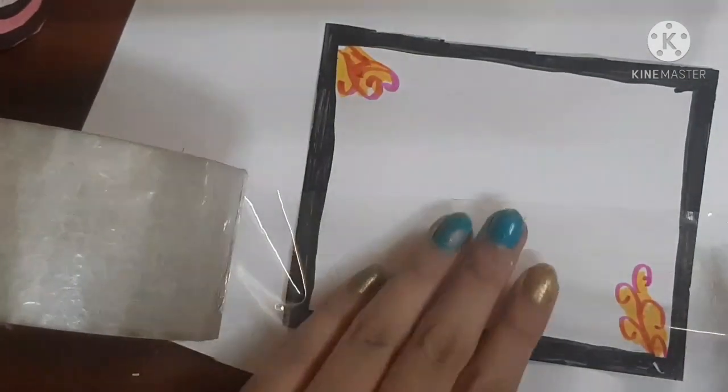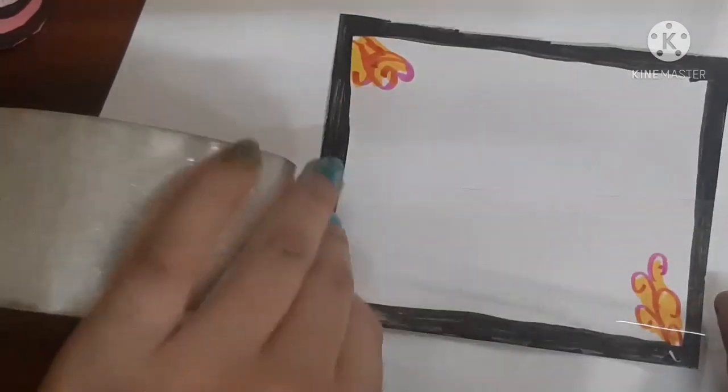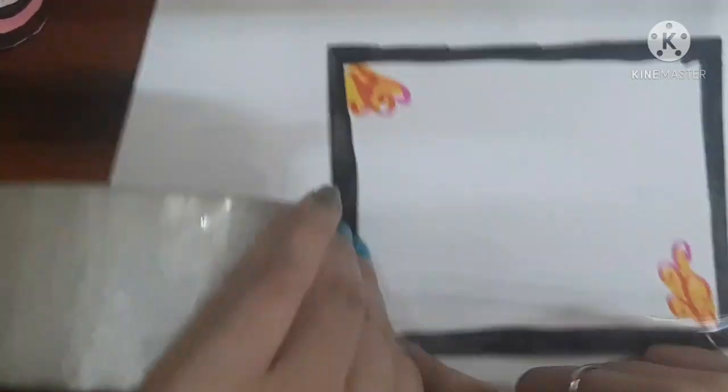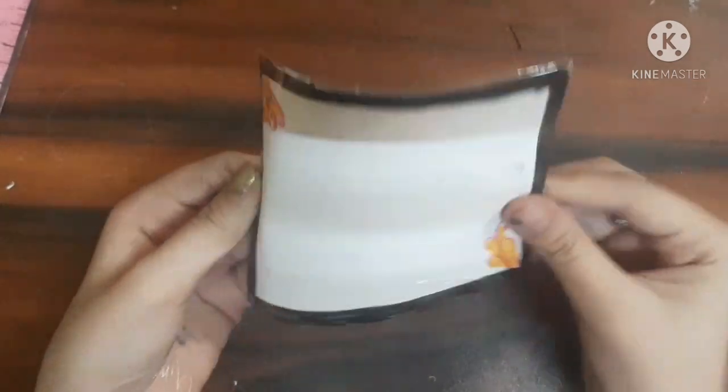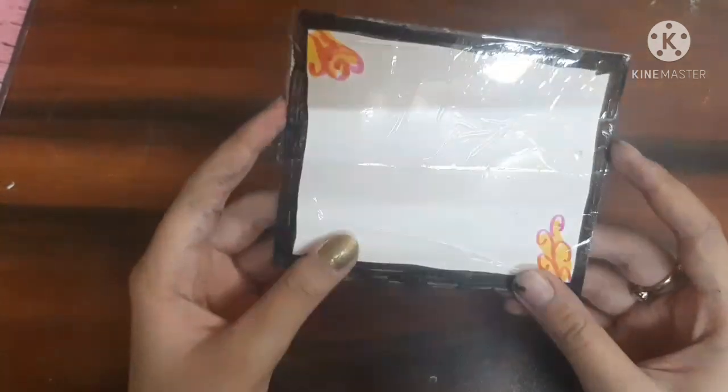This is a very important step. Now you have to cover the whole whiteboard with the help of transparent cello tape and just cut the excess parts. And here you go, this is like a nice DIY whiteboard.